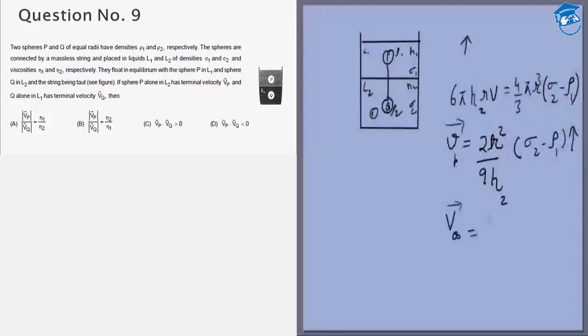In this case it's (ρ₂ minus σ₁) and this will be downwards. Why? Because Q is even heavier than L2. Remember, if there was no tension in the string Q would go downwards. Because there is a tension Q is staying afloat.